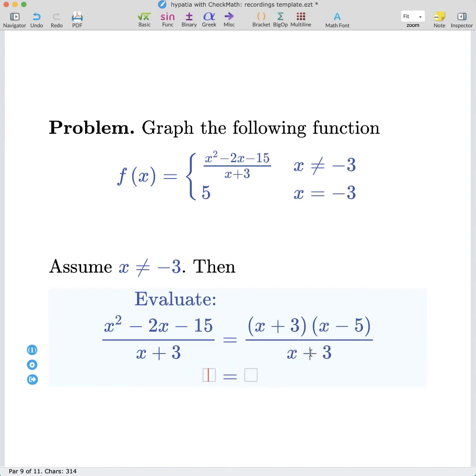We'll see that the x plus 3's cancel out, leaving us with x minus 5. Notice that CheckMath marked this as conditionally correct. This is an interesting and useful feature, because the denominator x plus 3 could possibly be equal to 0 if x equals negative 3.